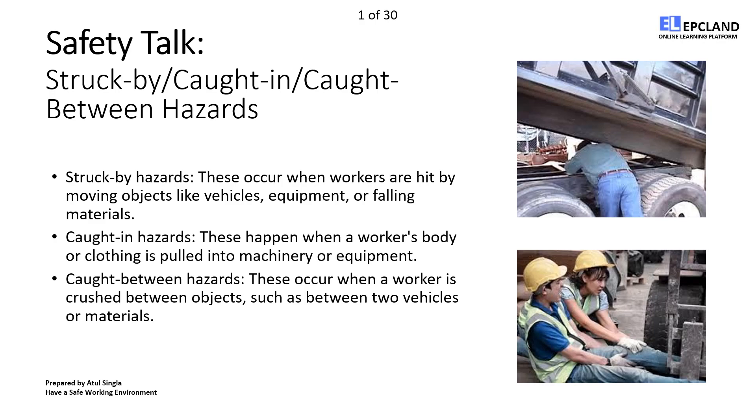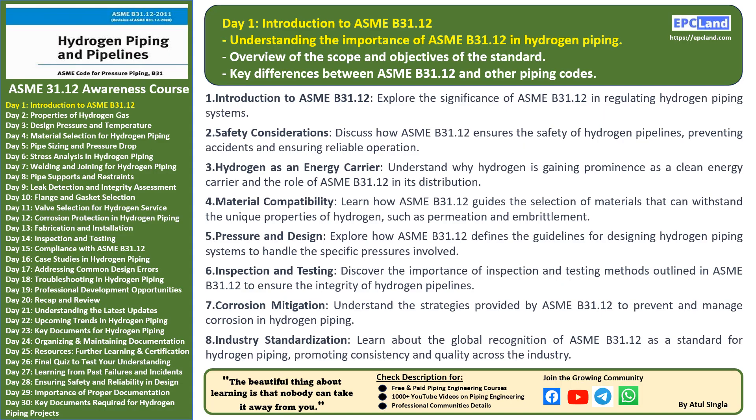Welcome to today's exploration into ASME B31.12, a crucial standard in the world of hydrogen piping. Today we delve into the importance of this standard, focusing on its role in ensuring the safety and efficiency of hydrogen pipelines. We'll explore the scope and objectives of ASME B31.12. First, let's understand why this standard is essential — hydrogen is emerging as a key energy carrier, playing a vital role in the transition to cleaner and more sustainable energy sources.